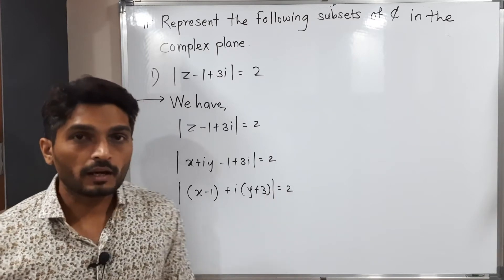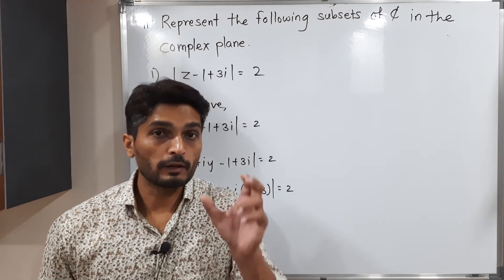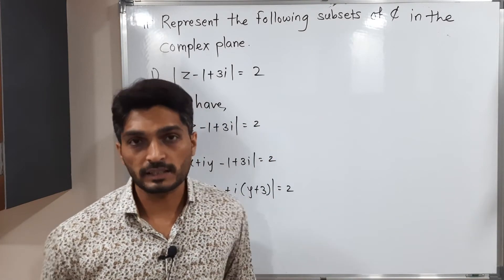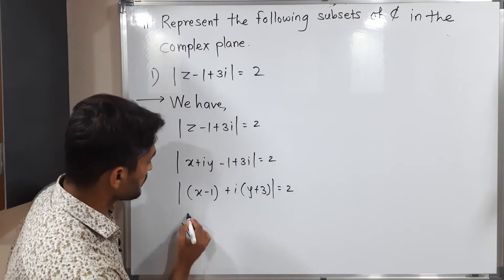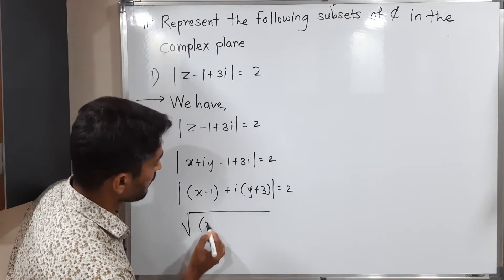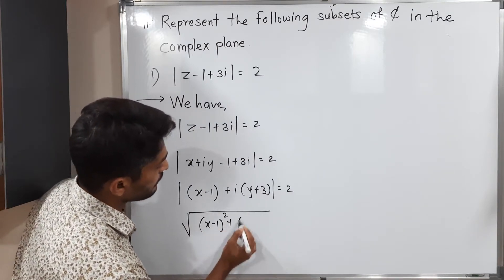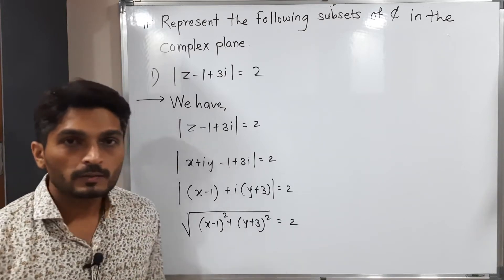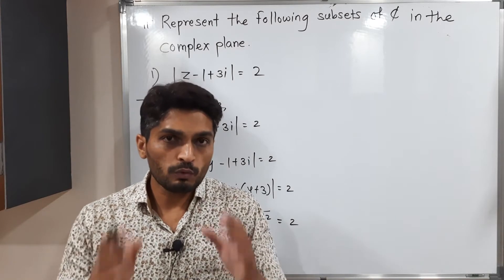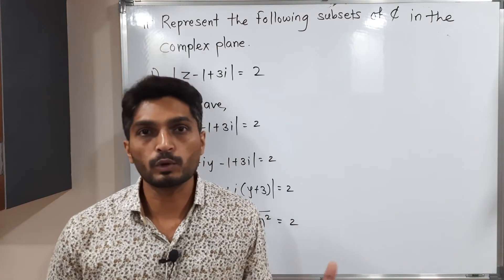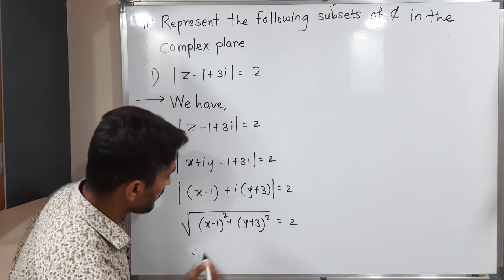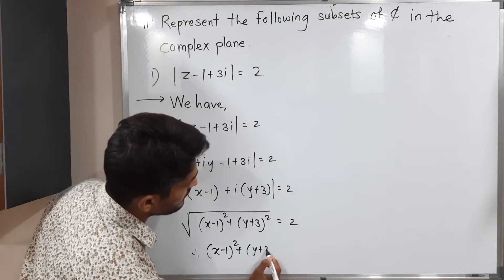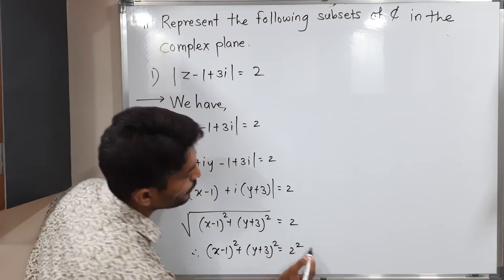You know well how to find the value of mod: it equals the square root of the square of the real part plus the square of the imaginary part. So this gives √[(x − 1)² + (y + 3)²] = 2. I don't like that square root, so to remove it I will square both sides. Therefore: (x − 1)² + (y + 3)² = 4.